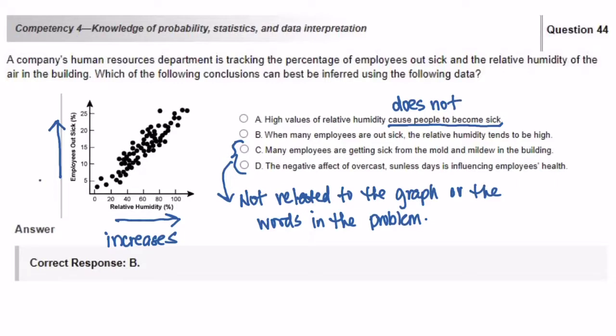So as the percent of relative humidity increases, so does the percent of employees out sick increase. So answer choice B, when many employees are out sick, the relative humidity tends to be high, is our answer choice.